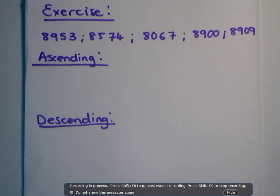Alright, so now we're going to start with our exercise. So we have the numbers 8953, 8574, 8067, 8900, 8909. Those numbers need to be ordered in the ascending order and the descending order.